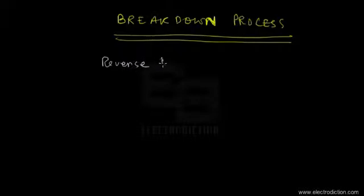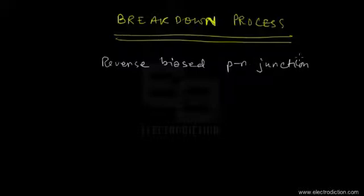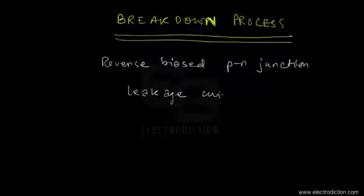Welcome to this tutorial on electronics. Today we're going to focus our attention on the breakdown process. This breakdown phenomena basically takes place in a reverse biased PN junction. Whenever we have a reverse biased PN junction, it conducts a very little amount of current known as leakage current, due to thermally generated free electron and hole pairs.